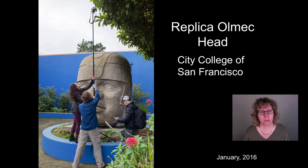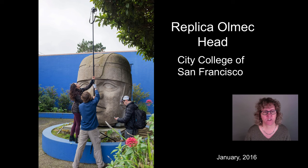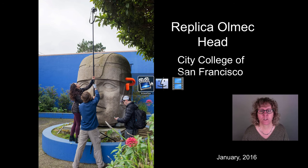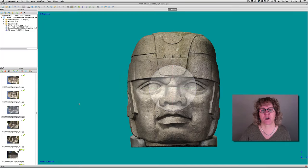Let me show you a couple of examples. I'm going to start with this Replica Olmec head at City College of San Francisco, which was placed there in 2004. Let's go look at this in photogrammetry software.